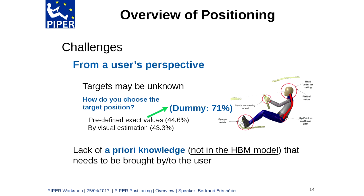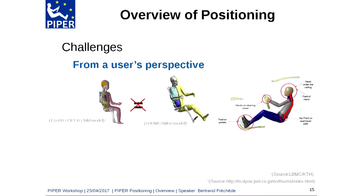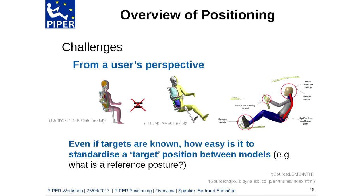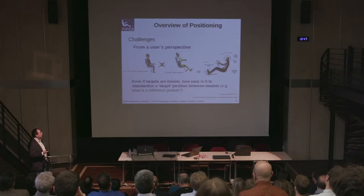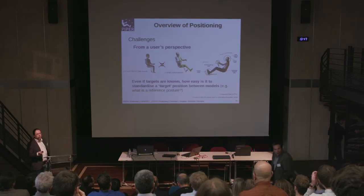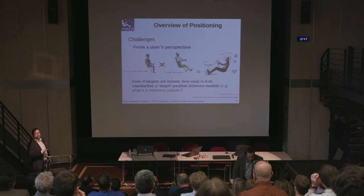Finally, from a user's perspective, each model is different. Even if targets are known, how easy is it to standardize a target position between models? The underlying question is: what is a reference posture? And this information is not within the HBM.